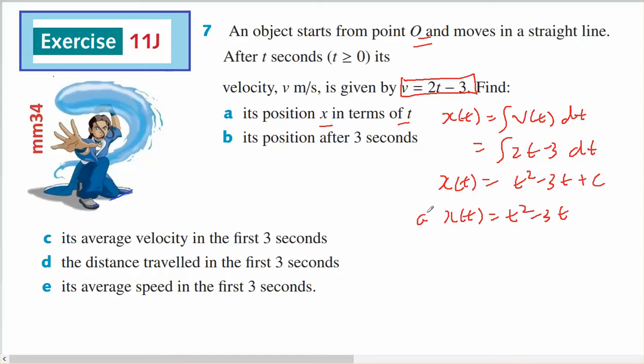And for part b, x of 3 will be 3 squared minus 3 times 3, which is 9 minus 9 or 0, so it's at the origin.